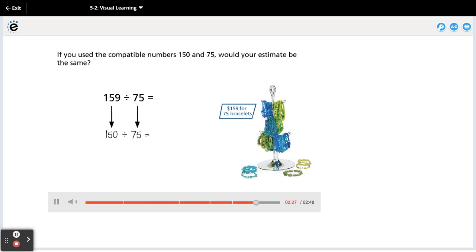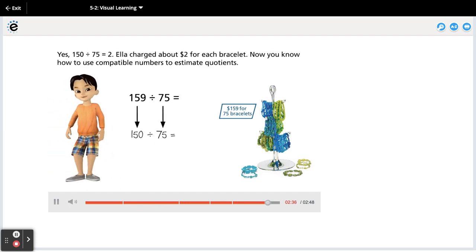If you use the compatible numbers 150 and 75, would your estimate be the same? Yes, 150 divided by 75 equals 2. Ella charged about $2 for each bracelet. Now you know how to use compatible numbers to estimate quotients.